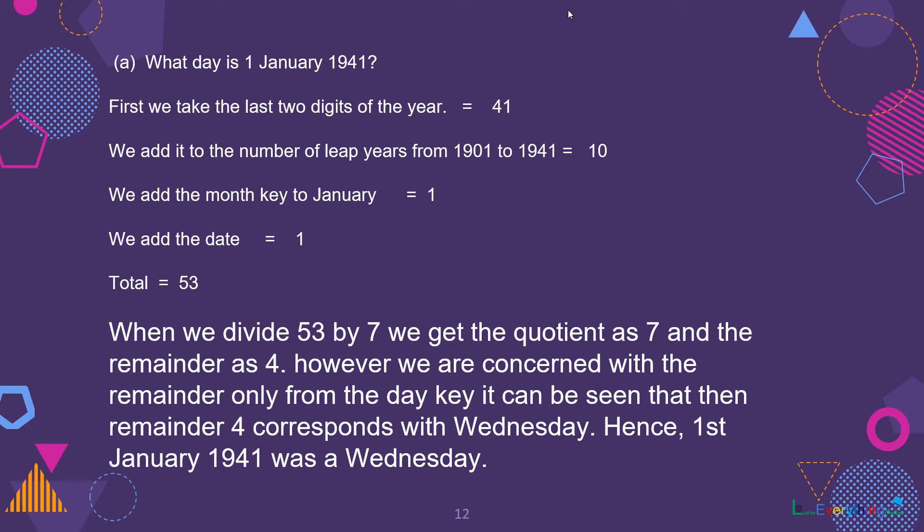From the day key, it can be seen that the remainder 4 corresponds with Wednesday. As we learned, 1 corresponds with Sunday, 2 with Monday, and so on. So by that key, 4 corresponds with Wednesday. Hence, 1st January 1941 was Wednesday. Try this trick with many dates till the year 2000 and tell me if this trick really worked for you.